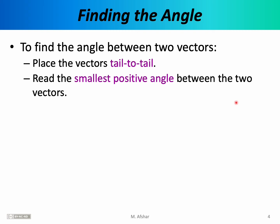Calculating the angle between two vectors can be somewhat confusing, so there is a very specific procedure for it. When asked to calculate the angle between two vectors, you must first put the vectors tail to tail — move the vectors without changing their orientations so that the tail of one coincides with the tail of the other. Then read the smallest positive angle between the two vectors. When it comes to calculating the dot product, the angle that we plug into the formula must be the smallest positive angle when the vectors are placed tail to tail.